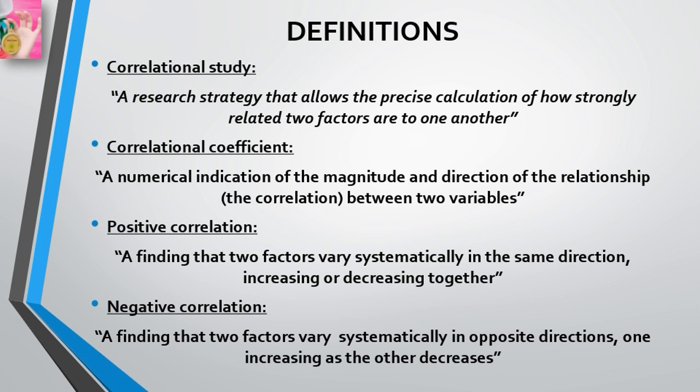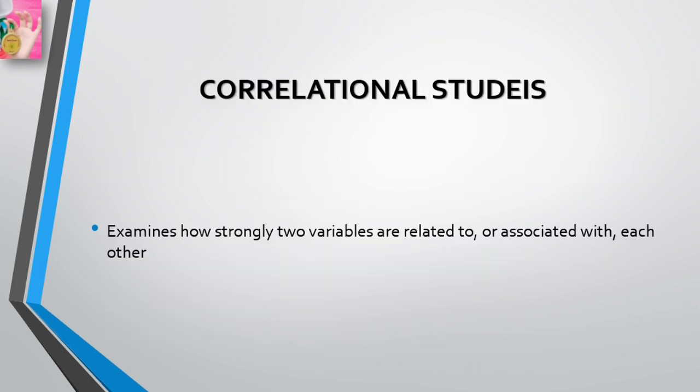A positive correlation is a finding that two factors vary systematically in the same direction — increasing or decreasing together. A negative correlation is a finding that two factors vary systematically in opposite directions — one increasing as the other decreases.